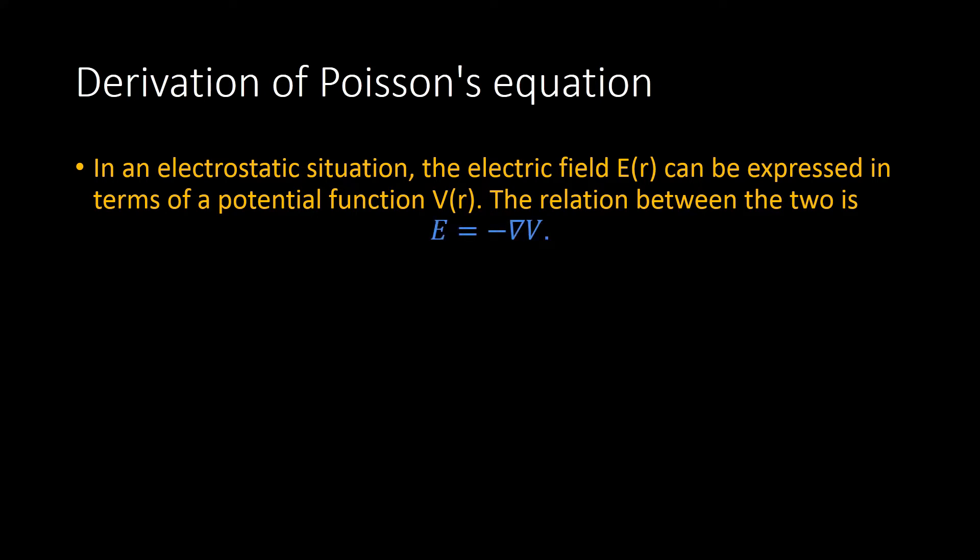We also know that the electric field and the charge density is a function of R which is divergence of E equals rho by epsilon naught. If we combine both equations together, then we will find divergence of minus del V equals rho upon epsilon naught.